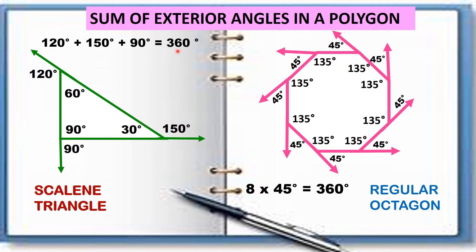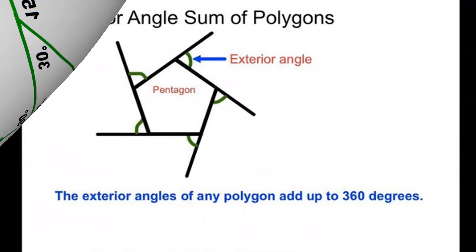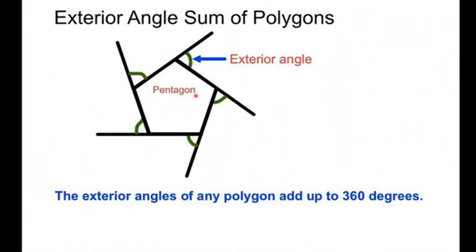Adding all exterior angles: 45 times 8 equals 360 degrees. We can say that the exterior angles of any polygon always add up to 360 degrees, regardless of the type of polygon.